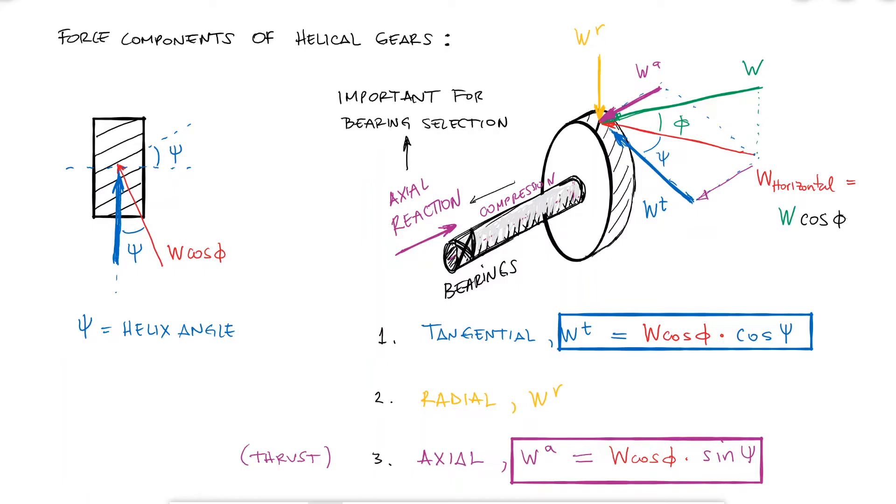The main reason we care about the axial component of the gear force is for the reaction forces of the bearings and having enough information to select proper bearings. The radial component of the force would be the opposite side of the triangle with the pressure angle, and therefore its expression is only W times sine of phi.